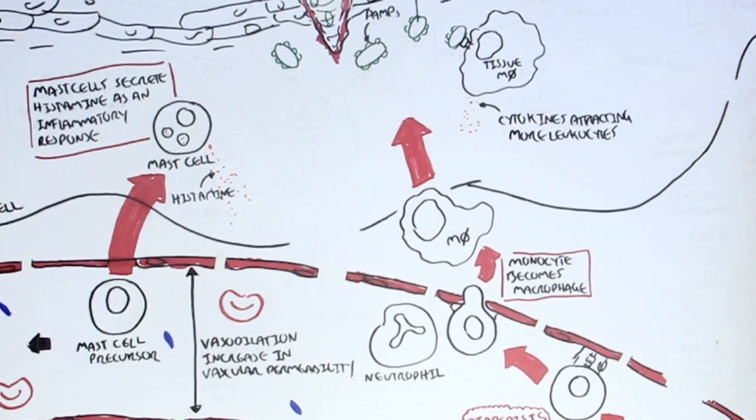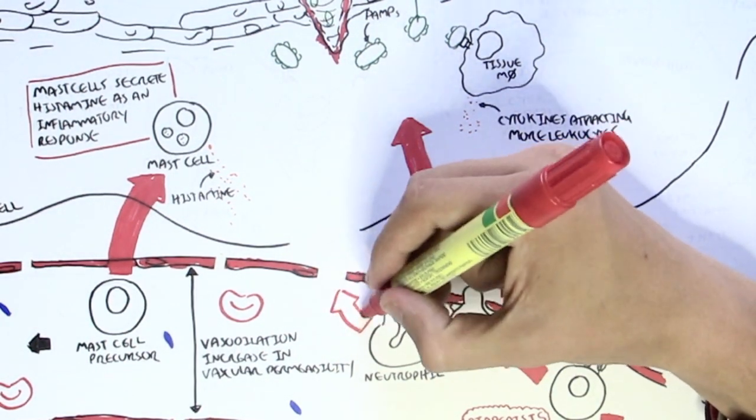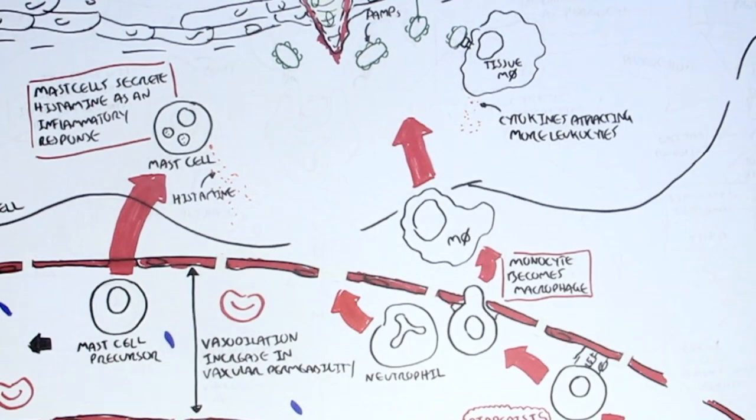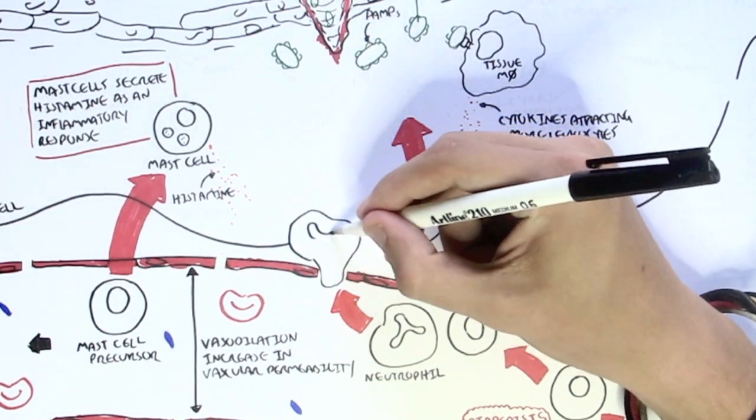And so histamine, together with the cytokines secreted by many of the innate immune cells, will attract and enable the circulating leukocytes to enter the infiltrated area. Typically, a neutrophil, which are the fast-acting cells.